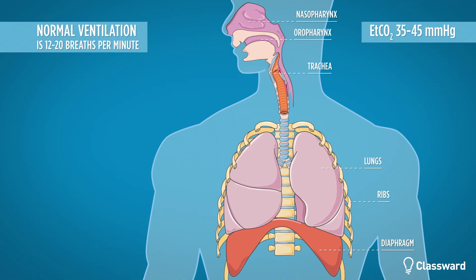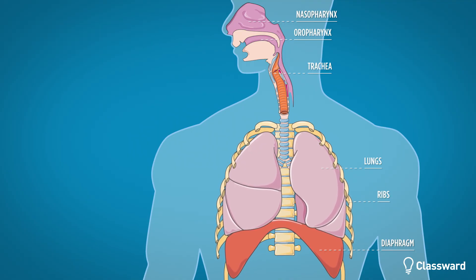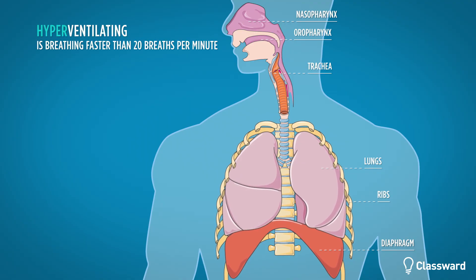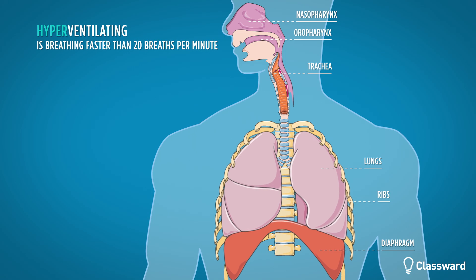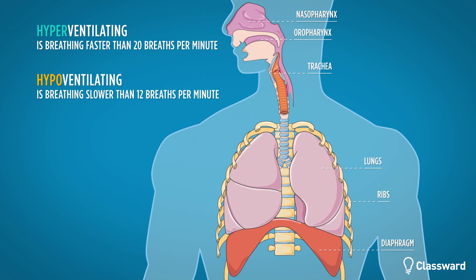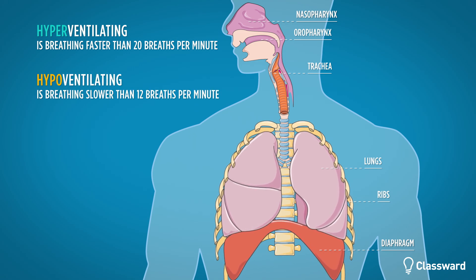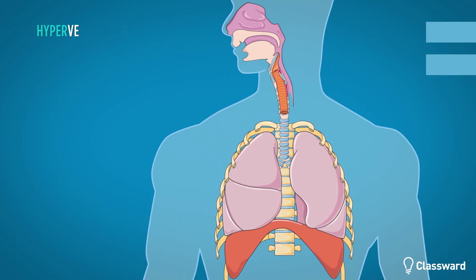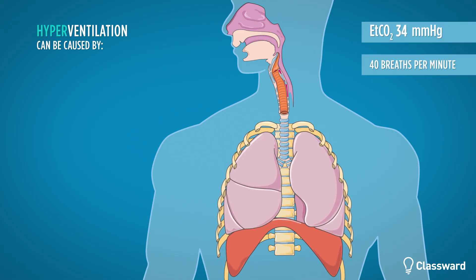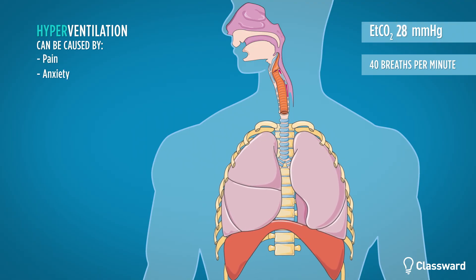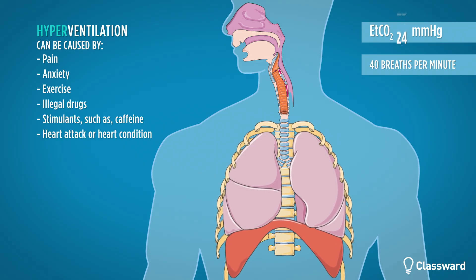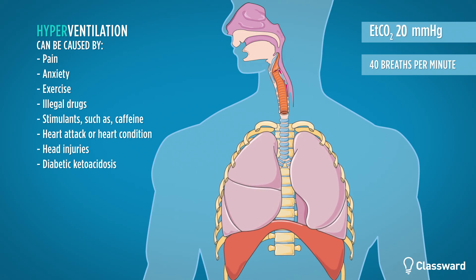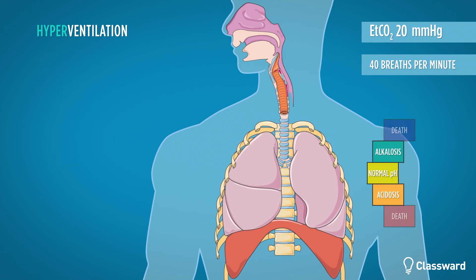With abnormal ventilation, the body is said to be hyper- or hypoventilating. A body that is hyperventilating is breathing faster than 20 breaths per minute; conversely, a body that is hypoventilating is breathing slower than 12 breaths per minute. Hyperventilation can be a compensatory mechanism to blow off CO2, which can be caused by pain, anxiety, exercise, illegal drugs, stimulants, a heart attack, head injuries, or diabetic ketoacidosis.